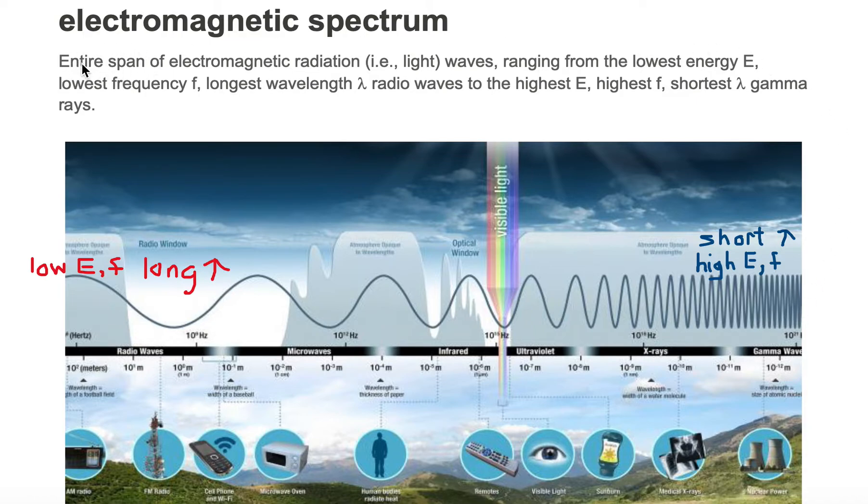So since we are talking about a span, we must have two ends to the span. On the left end, we absolutely must have the very lowest energy, lowest frequency, longest wavelength radio wave. And at the very other end, we must have the very shortest wavelength, highest energy, highest frequency gamma rays. And this electromagnetic spectrum spans in between in terms of wavelength, frequency, and energy.